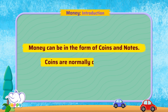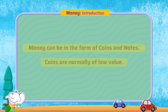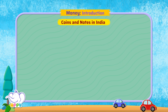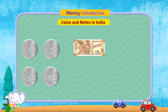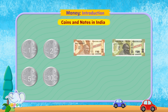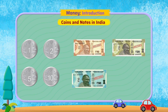Coins are normally of low value. In India, coins are available as 1 rupee, 2 rupees, 5 rupees, and 10 rupees. And notes are available as 10 rupees, 20 rupees, 50 rupees, and 100 rupees.